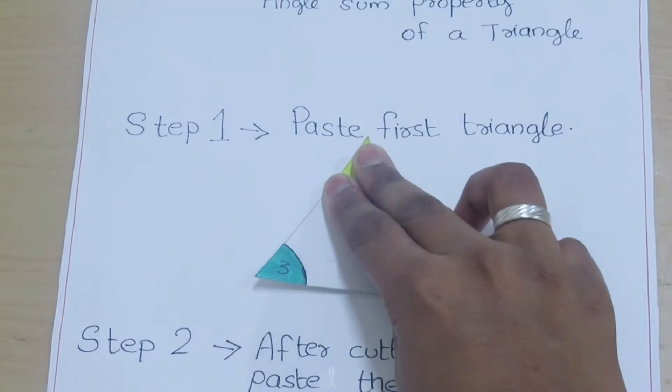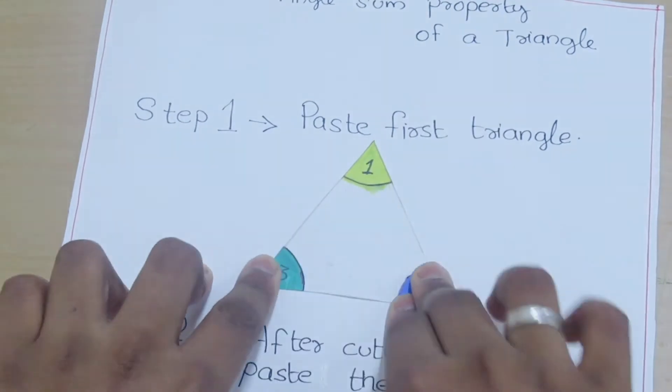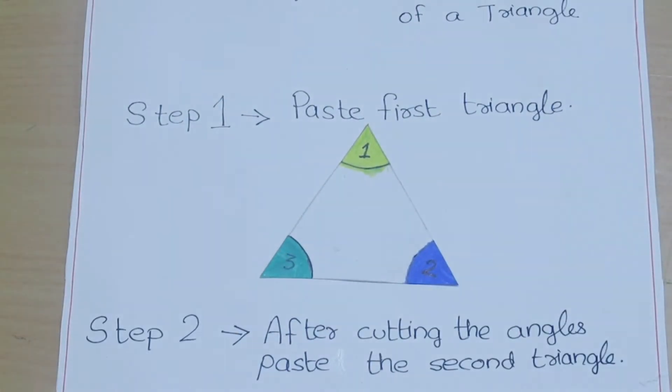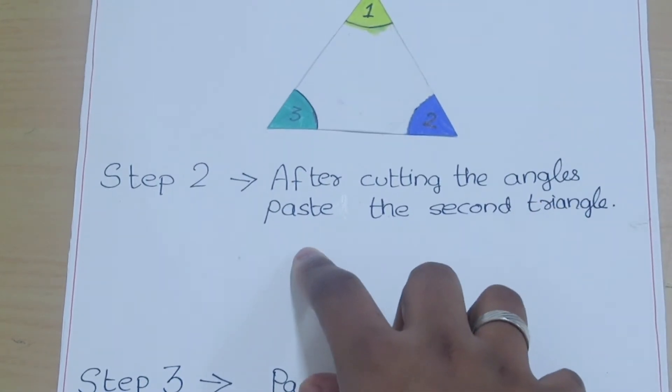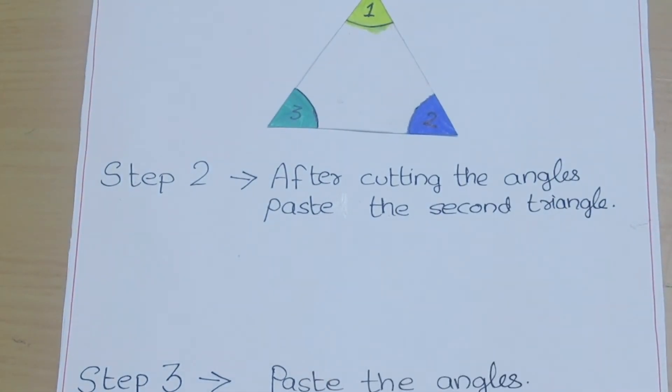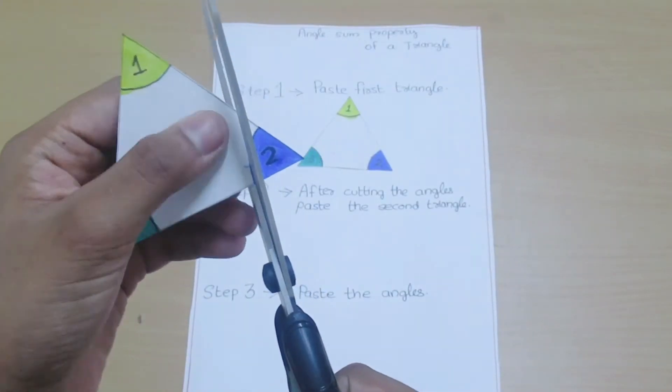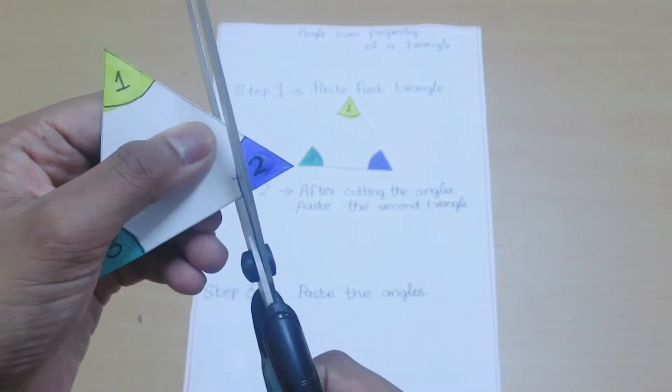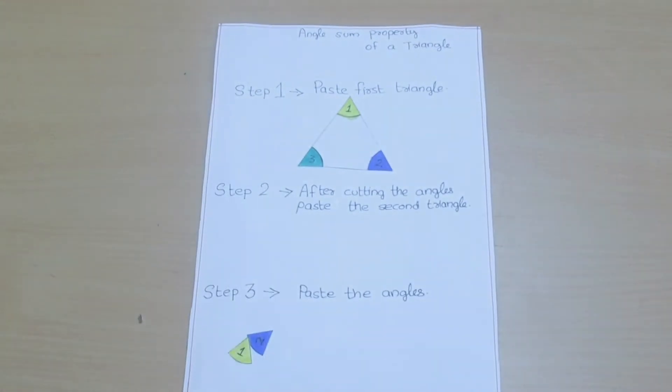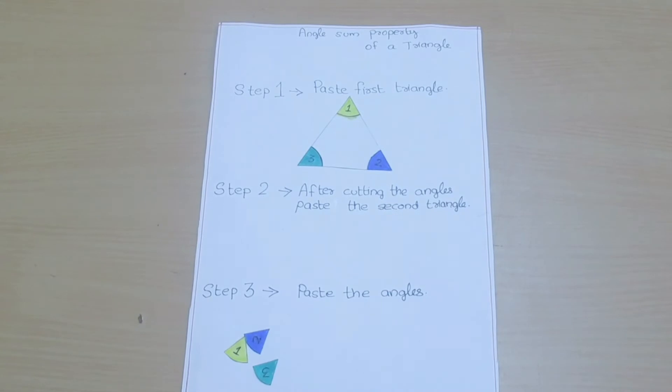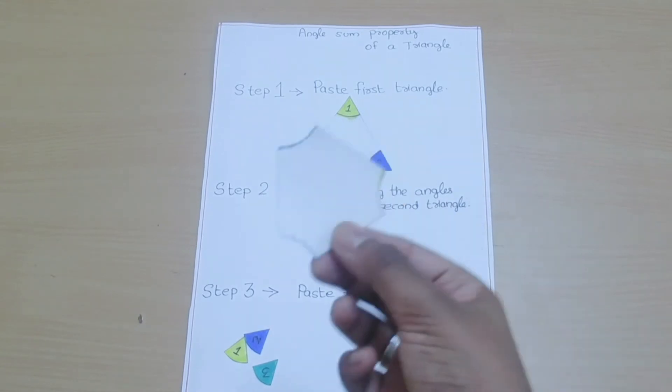Second step is after cutting the angles, paste the second triangle. Now I have cut all the three angles. Now paste the second triangle.